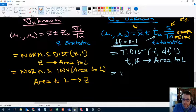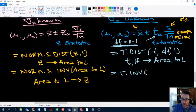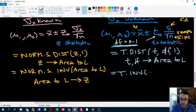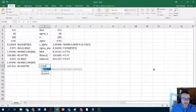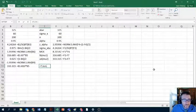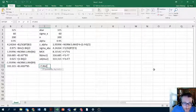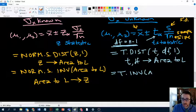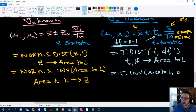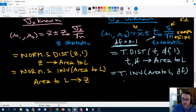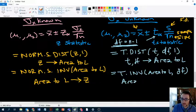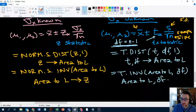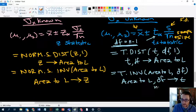And then similarly, t dot inv. And then in here we'll give it an area to the left and the degrees of freedom. What's the order for these? Area and then degrees of freedom. So area to the left. And then that'll spit out our t. And again, we're going to use n minus one for both of these degrees. Okay.